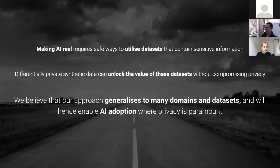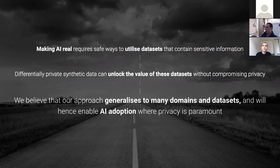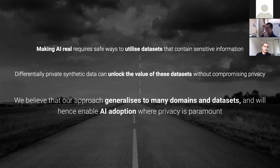In conclusion: first, making AI real requires safe ways to utilize data sets that contain sensitive information — there's loads of sensitive data locked up in organizations that should not be used as-is or in anonymized form. Second, differential private synthetic data can unlock the value of these data sets without compromising privacy. Third, this approach is simple and generalizes to many domains and data sets, and hopefully will enable AI adoption in many areas where privacy is paramount.